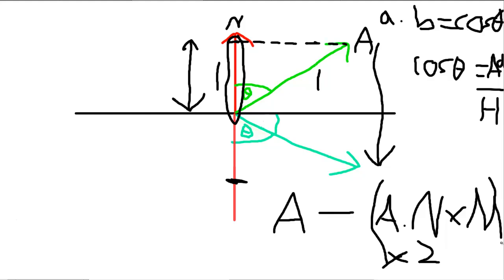That gives me the reflection direction. Don't forget to normalize it afterwards so that the direction is a unit vector as well. If I wanted to find the other reflection type I would simply negate the direction. I'll now show you how to do this using quaternions.